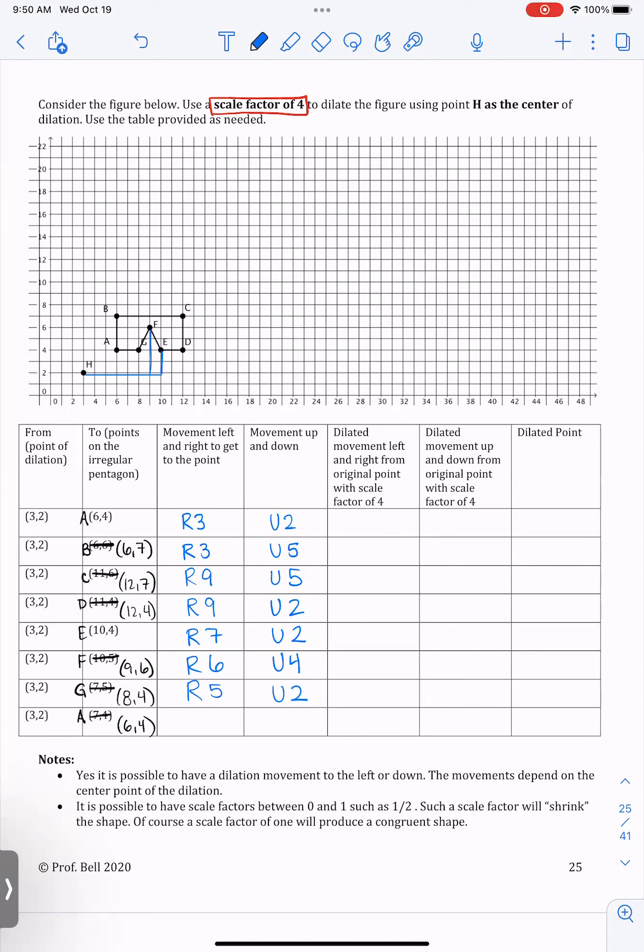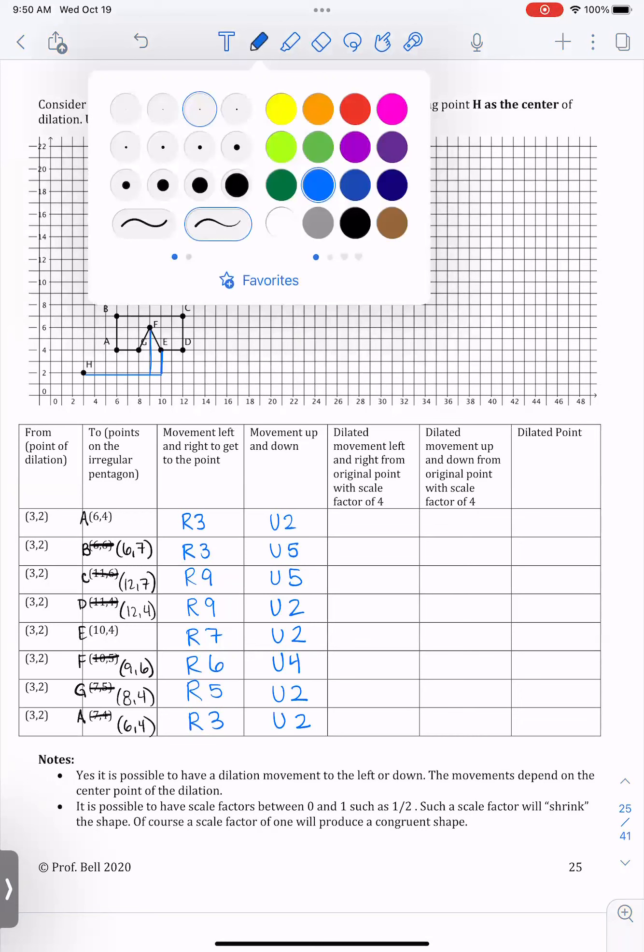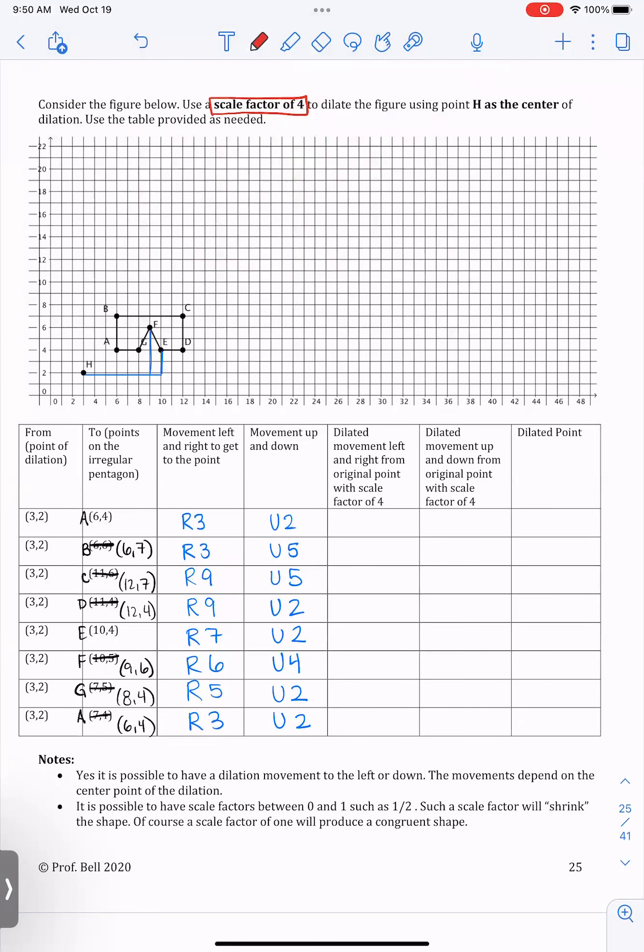And finally, we're back at point A, which was right three units, up two units. So the way that we want to think about a dilation of a scale factor of four is that when we go to make our final image, our distance away from the point of dilation will be four times as large because our scale factor is four. So what we're going to do is multiply by four each of our movements to the right and up.